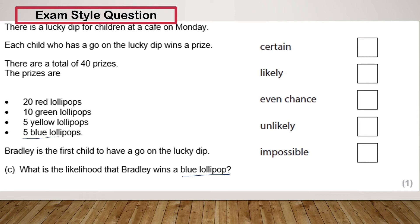Now if we look back up, there are five blue lollipops in total, and there are a total of 40 lollipops, which I can confirm: 20 plus 10 plus 5 plus 5 give me 40. So the chance that Bradley is going to win a blue lollipop is there's five blue lollipops and 40 lollipops in total. So there's a 5 out of 40 chance, or 5 fortieths, that Bradley is going to win a blue lollipop.